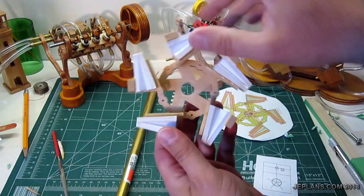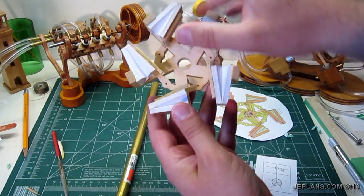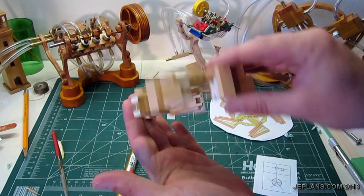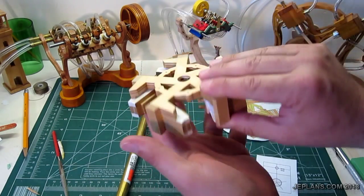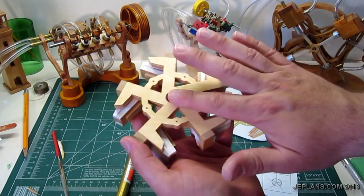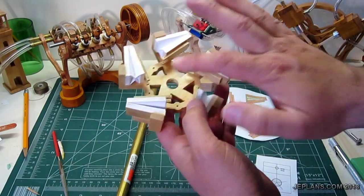So we're at the point where all the bellows are glued on to the main wheel here. Now we need to make the middle, basically the axle and valve control system that's going to go in the middle here.